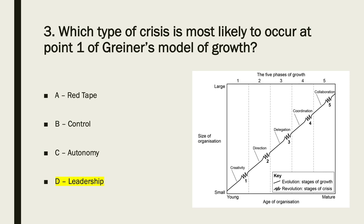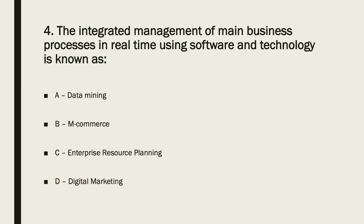Let's move on to question four. The answer is C — enterprise resource planning. That is the integrated management of main business processes in real time using software and technology.